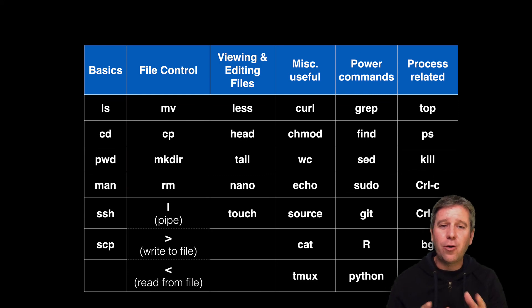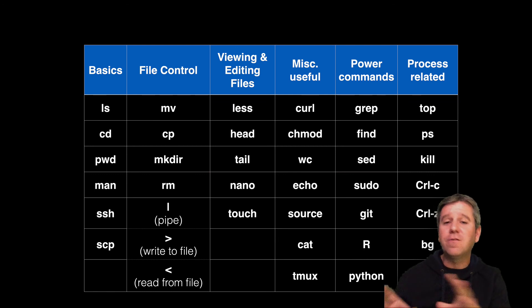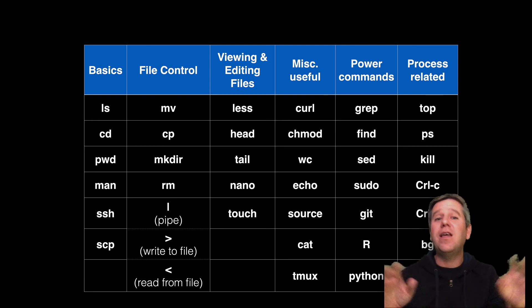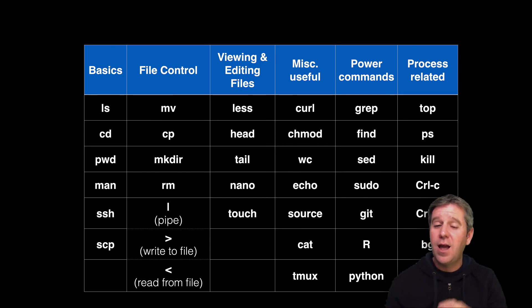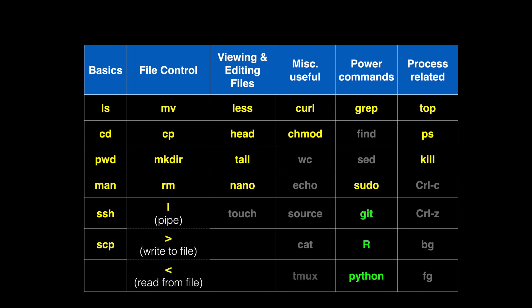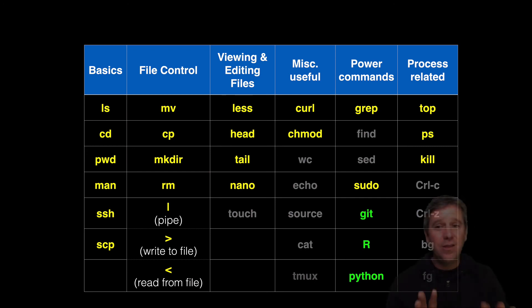To prepare for this class, I kept a log of all the commands and programs I used for a whole week, and I've organized them into the categories shown in this table. Because UNIX is modular, if we learn just five of these commands, we can do way more than just five things — maybe 20 or 30 more things — which makes it really powerful. We'll focus on the 22 core UNIX commands highlighted in yellow that I think you'll use 95% of the time.